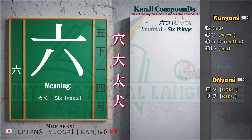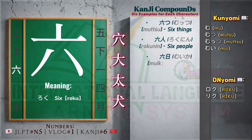Six things. Rokunin — six people. Muika — six days.